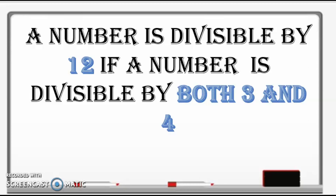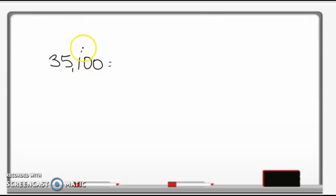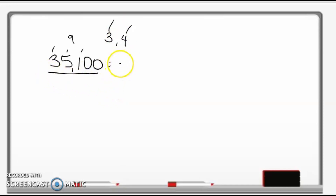A number is divisible by 12 if it is divisible by both 3 and 4. Let's have some exercises. Is 35,100 divisible by 12? We first check if it is divisible by 3 by adding the digits: 3 plus 5 plus 1 equals 9, which is divisible by 3. It also ends with two zeros, so it is divisible by 4 as well. Since both conditions are met, 35,100 is divisible by 12.